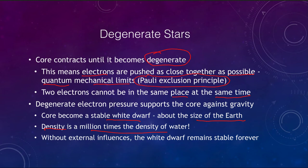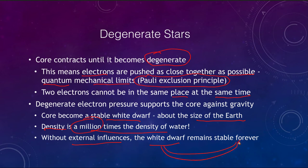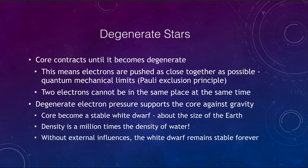Unless you start to compress things more and more, you won't notice this effect. This is what we call degenerate — the density becomes incredibly high, a million times the density of water. For comparison, some of the denser metals are only 10 to 20 times the density of water, so this is far denser than anything we can imagine. Once a white dwarf forms without any external influences, it will remain stable forever and will only slowly cool off — that is the only change that can occur.